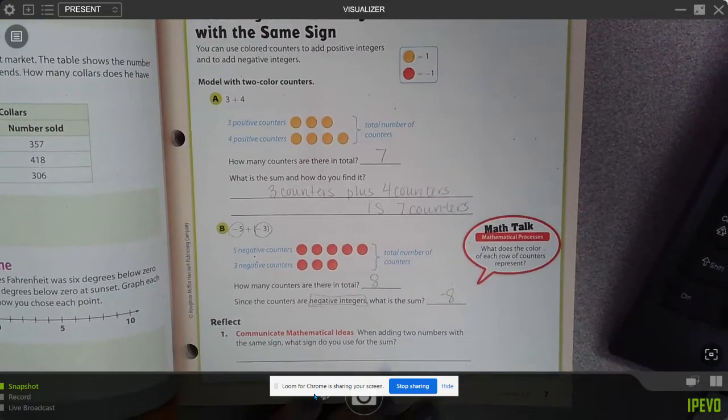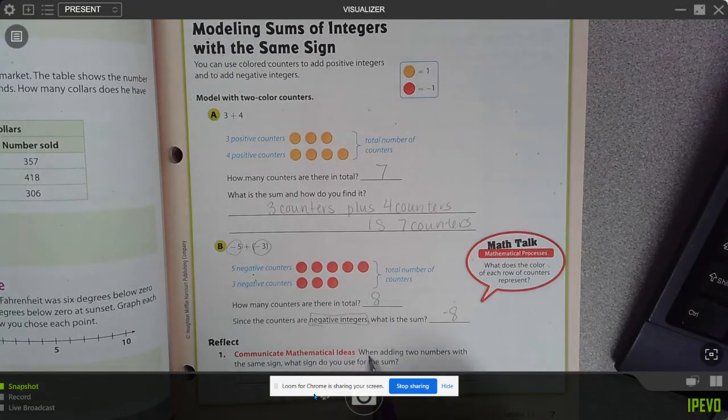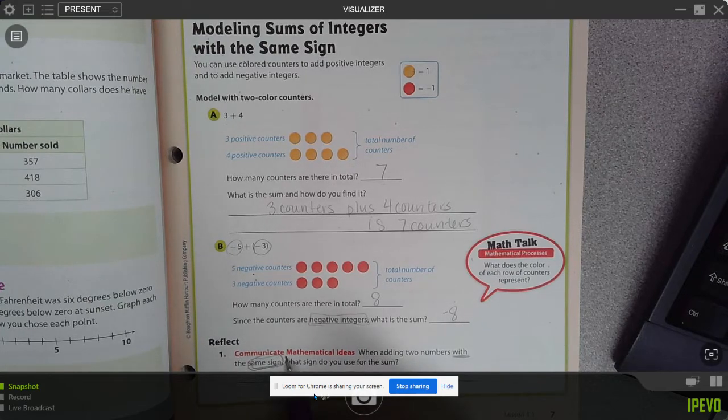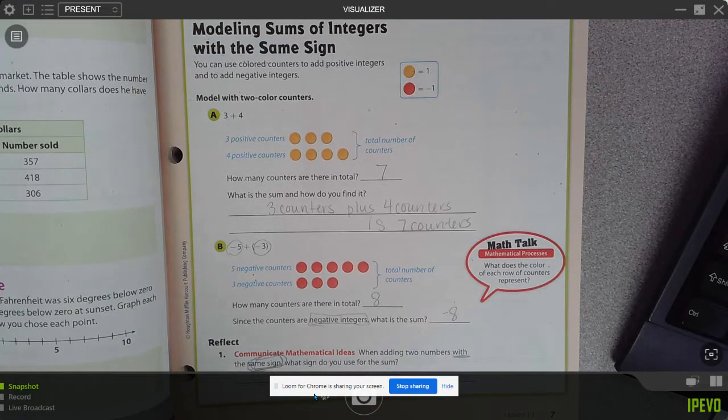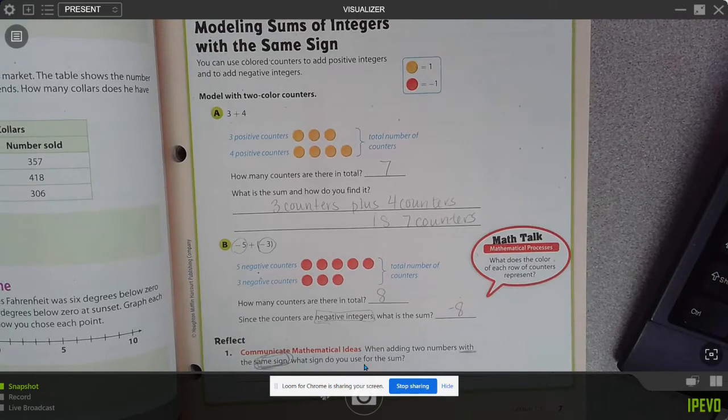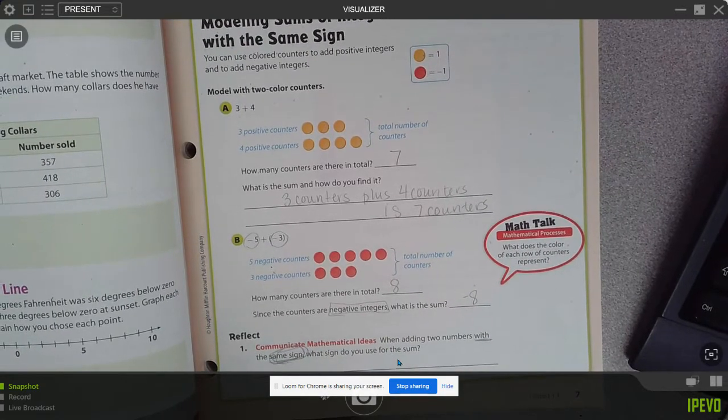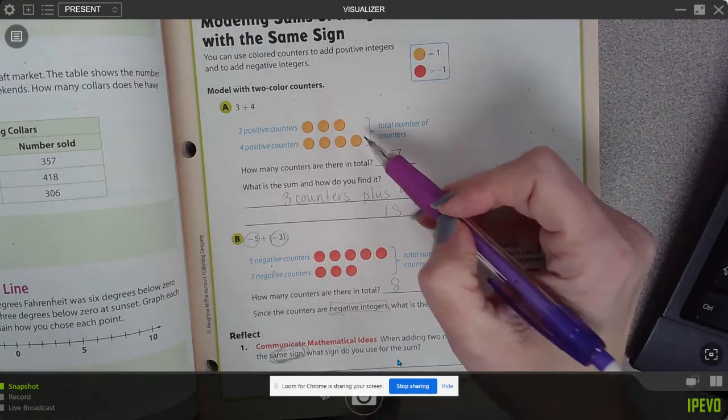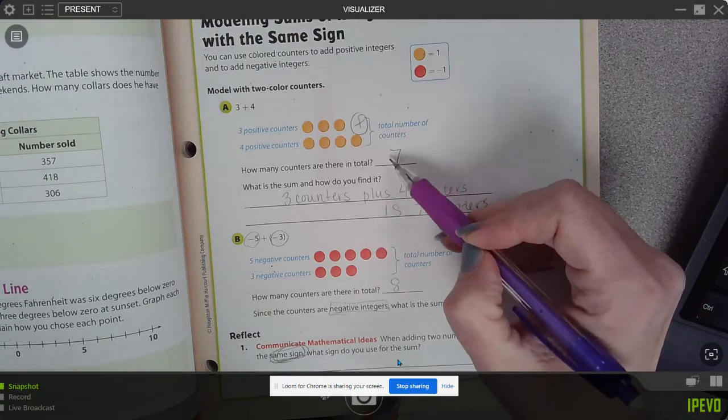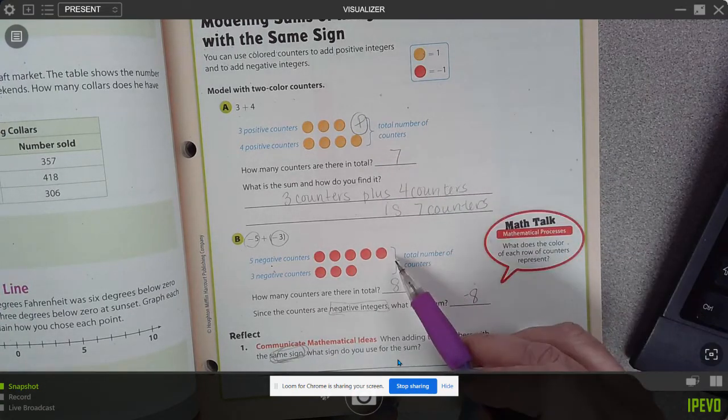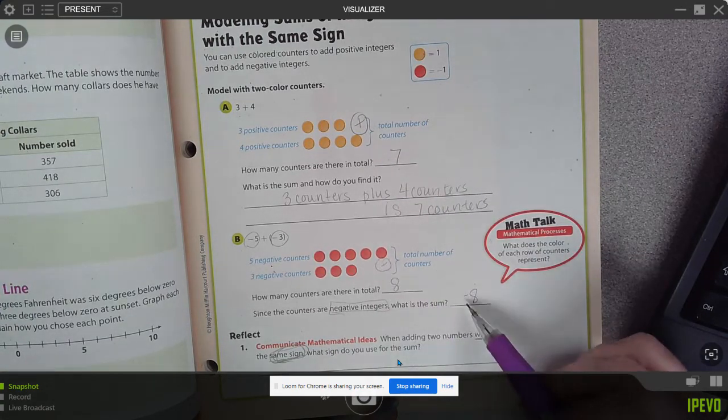So the big idea is when adding two numbers with the same sign, that is important with the same sign, what sign will you use for the sum? Well, you'll notice positive ended up being positive, negative ended up being negative.